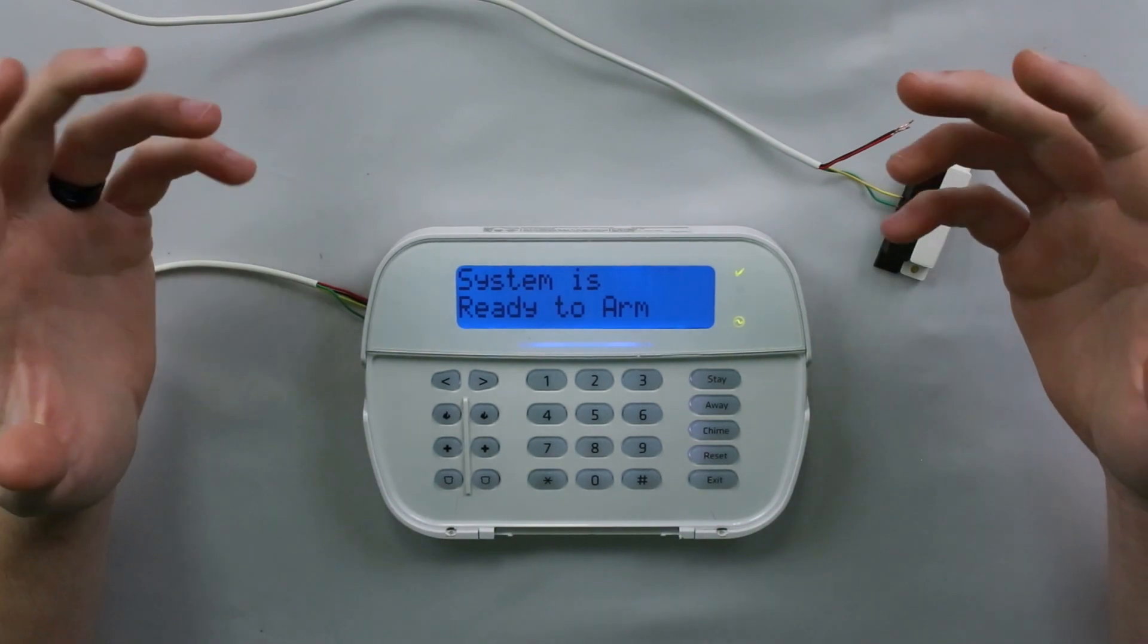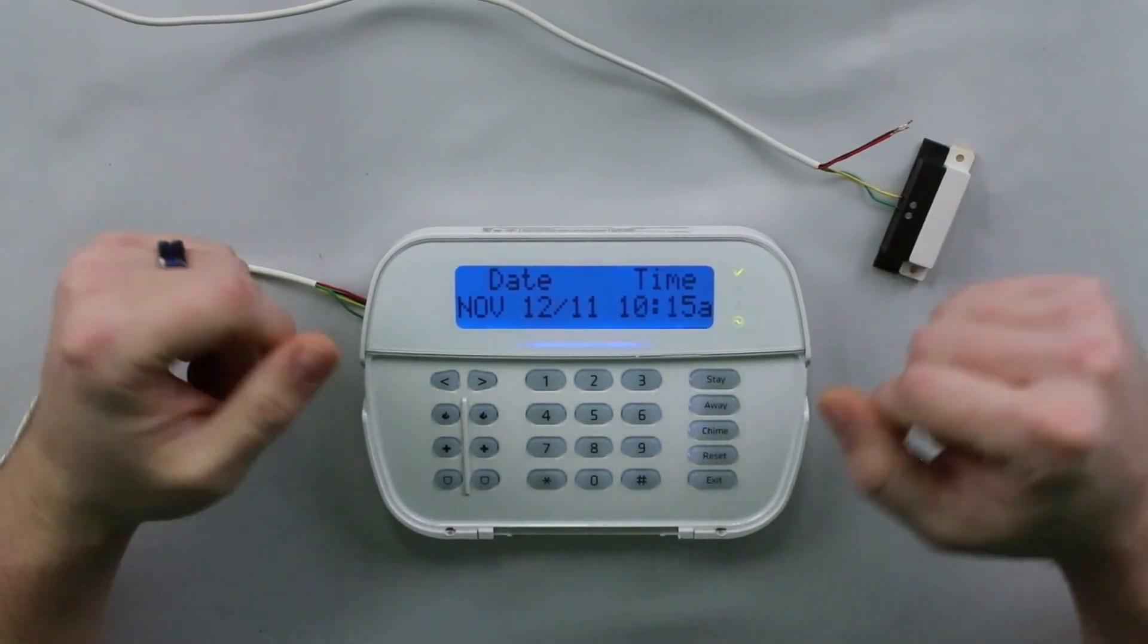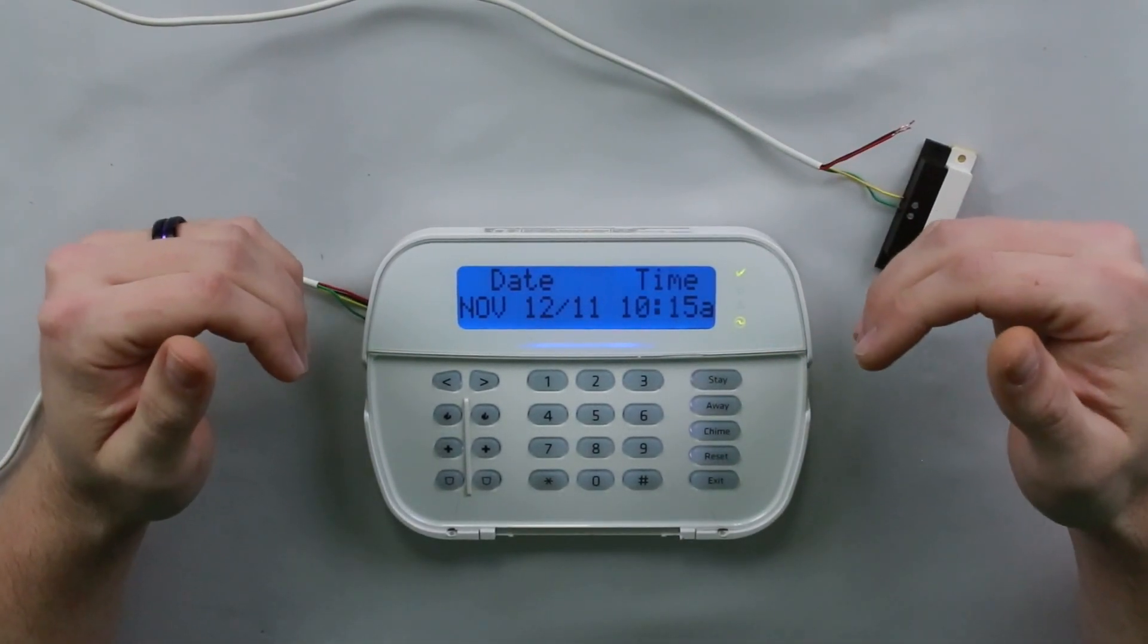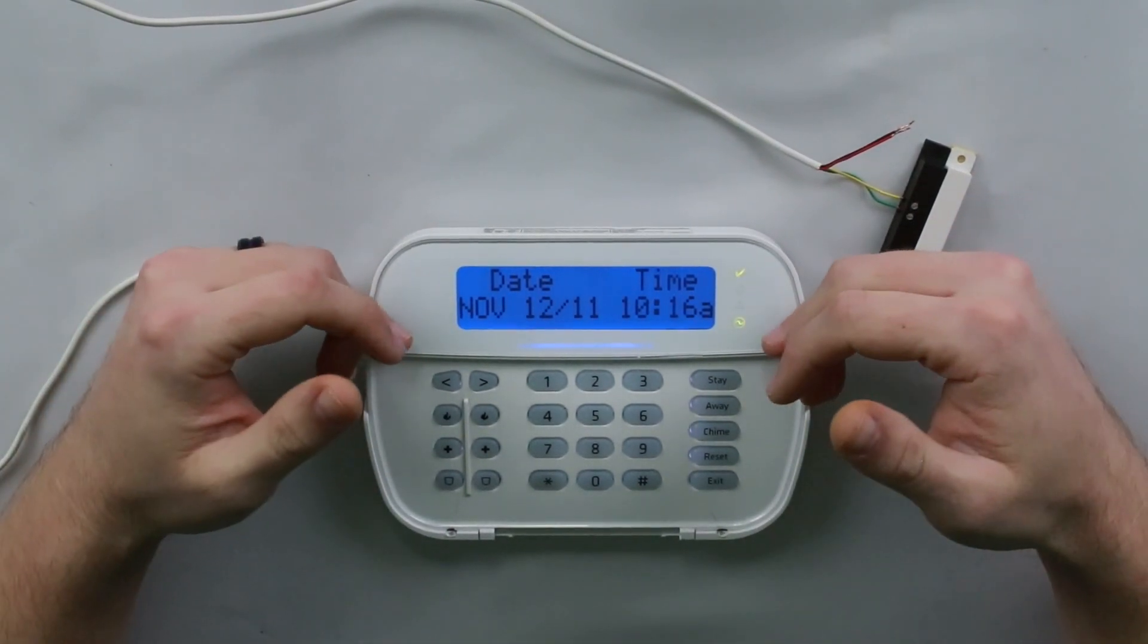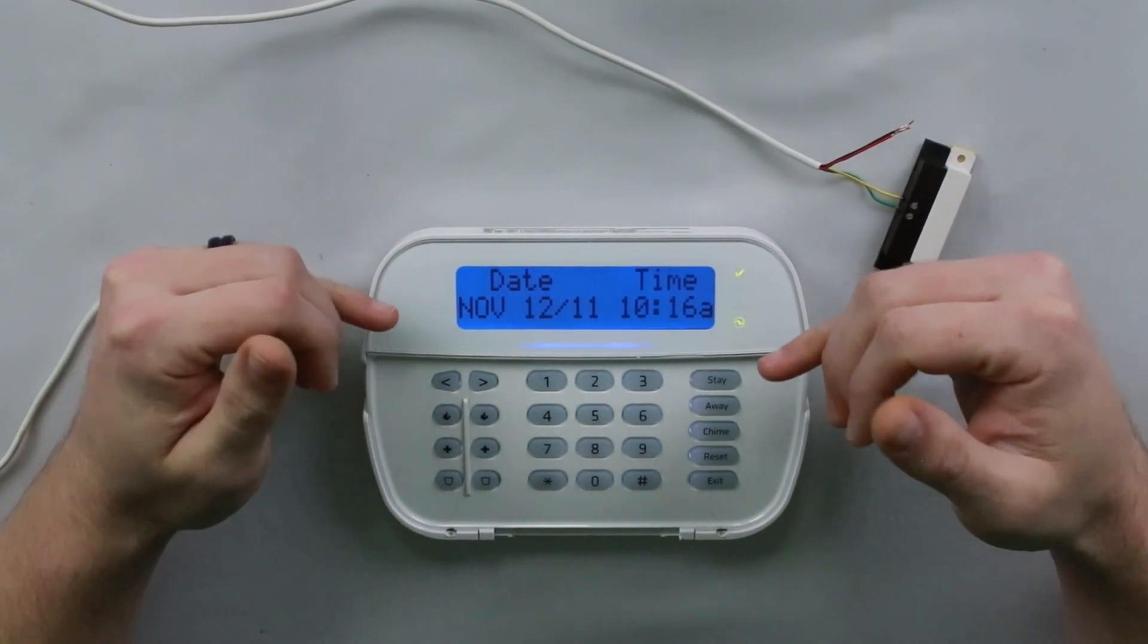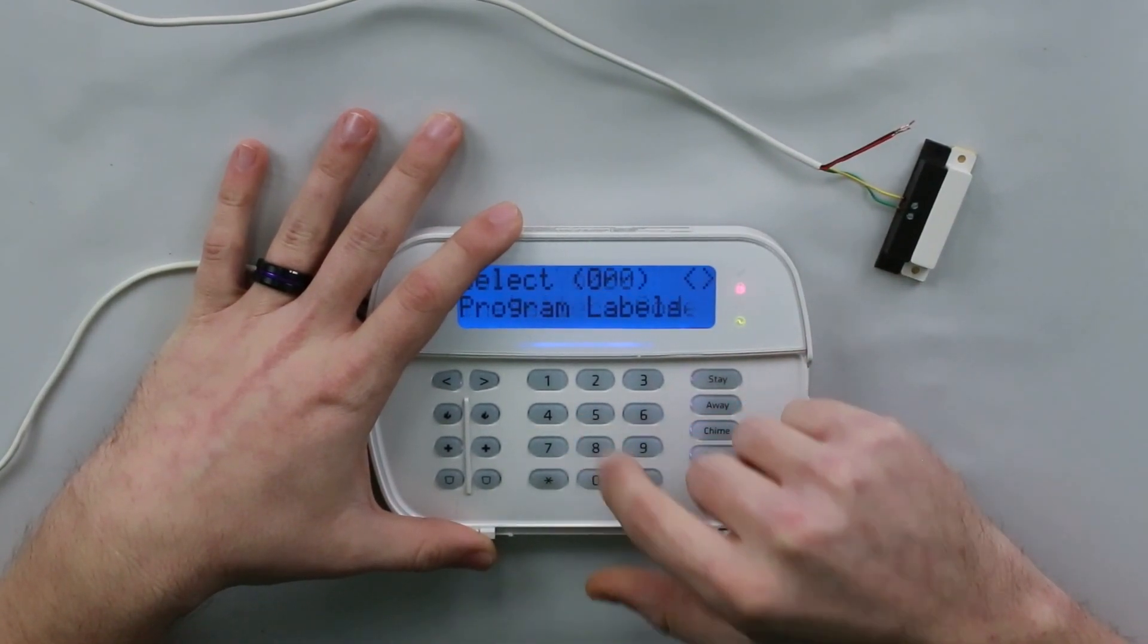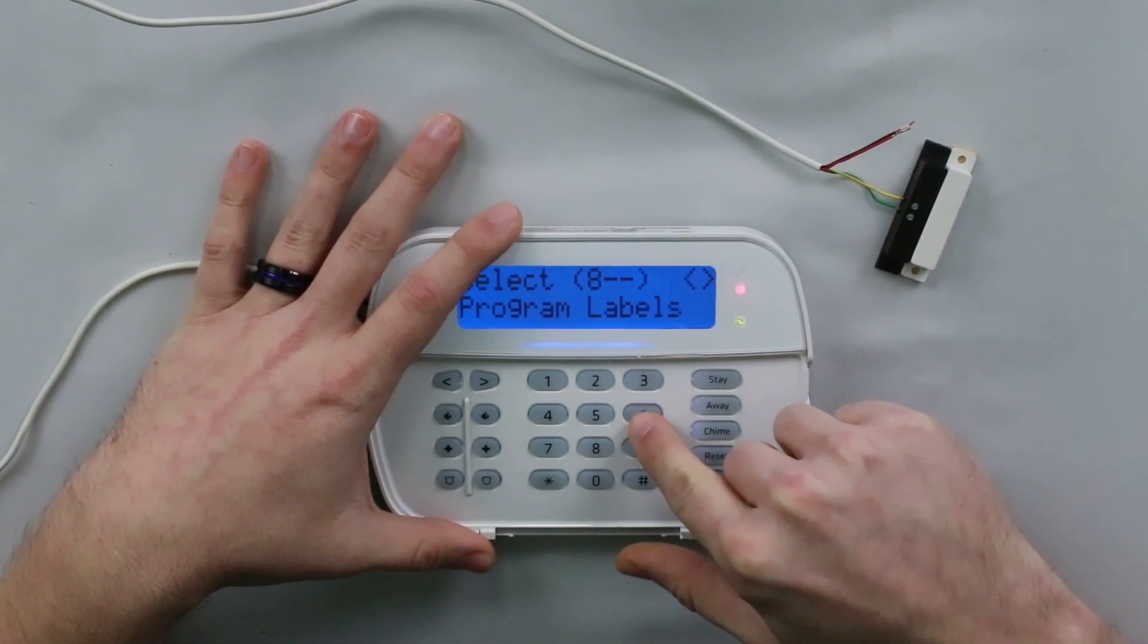Now what we can do is we can actually go into programming and adjust the chime for each individual zone. There's a couple ways to do that. For each keypad, this is going to be different, so you have to know what number your keypad is. The first thing we're going to do is find out the number of the keypad, and then we'll go into keypad programming to set the chime for each zone. So what you do is go into programming, which is star eight, followed by your installer code.